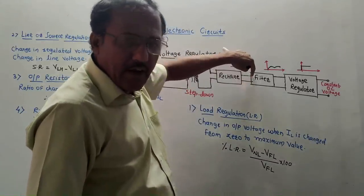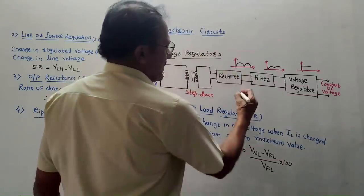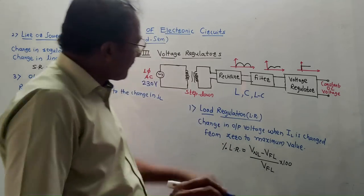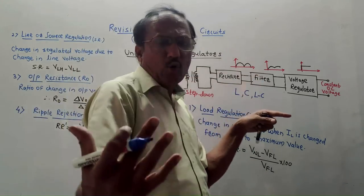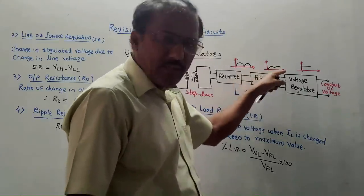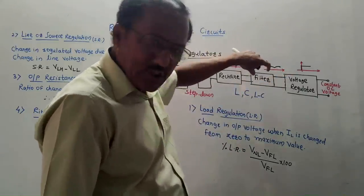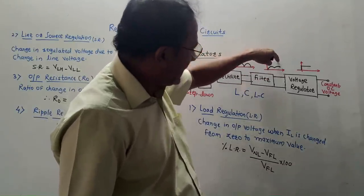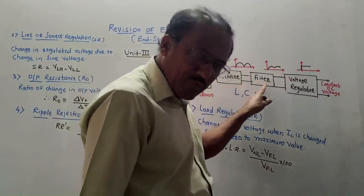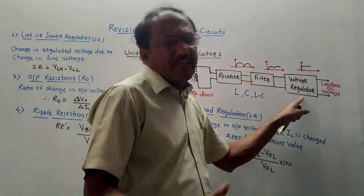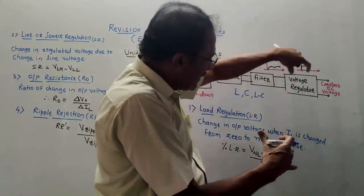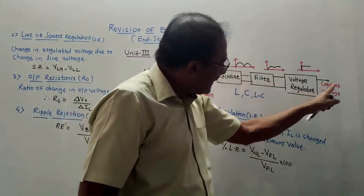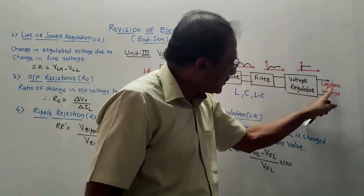Then we connect the filter. Different types of filters are used: L (inductive filter), capacitive filter, LC filter, and so on. The output of the filter will be a smooth output but still in the form of pulses. Basically the filter is used to cancel out the ripple, but the output is still not constant — it is not DC. Then this output of the filter is applied to the voltage regulator circuit, where we discuss different concepts of voltage regulation.